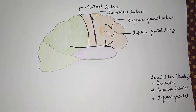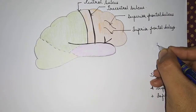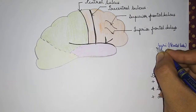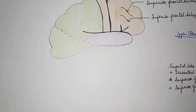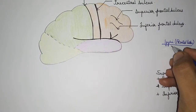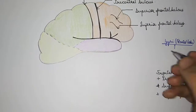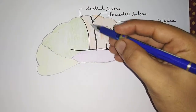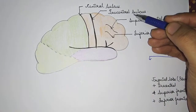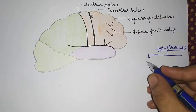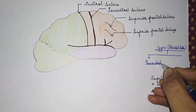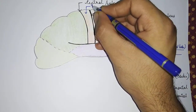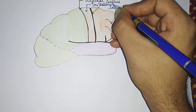Now let's talk about the gyri in the frontal lobe. The area between the central sulcus and the pre-central sulcus is termed the pre-central gyrus. Let me label it on the diagram as pre-central gyrus.